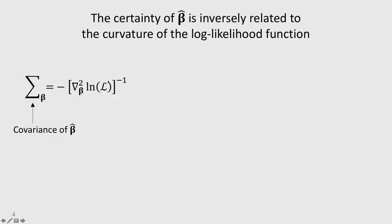Remember, the Hessian is the matrix of second derivatives. So this inner term inside this bracket is just this Hessian matrix that comes out of our estimation procedure. And then we take the negative inverse of it to get our covariance.